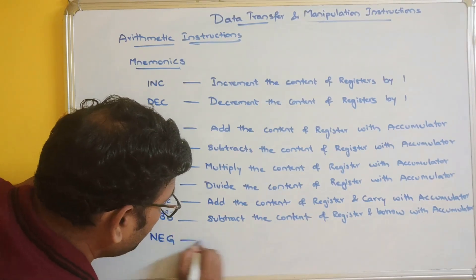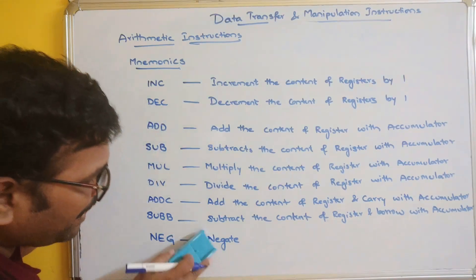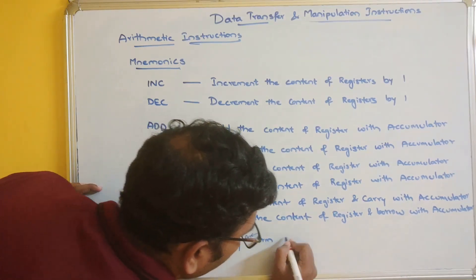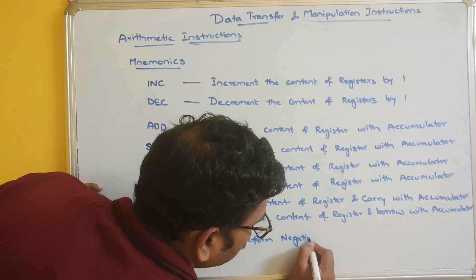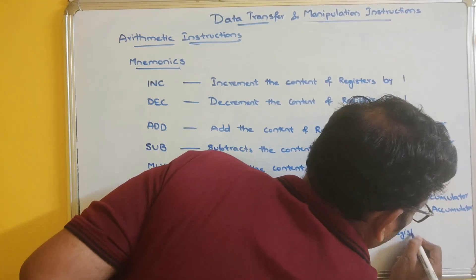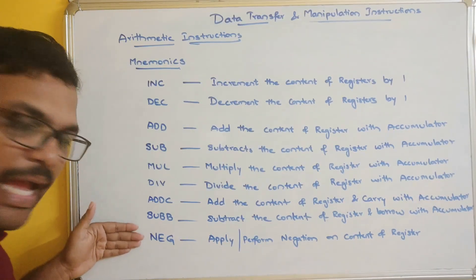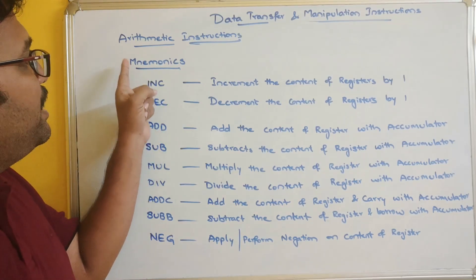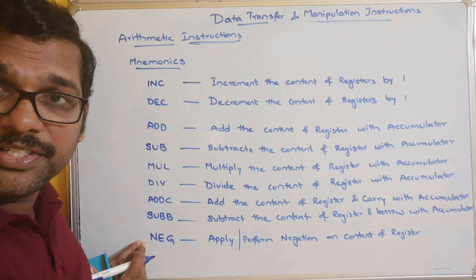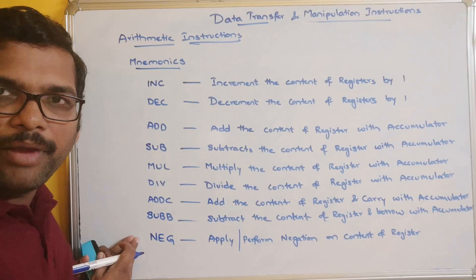NEG means negation - it applies or performs negation on the content of a register. So all these instructions - increment, decrement, add, subtract, multiply, divide, ADDC, SUBB, and negation - all come under the arithmetic instructions. These are the mnemonics which represent the operation. Op code is in binary format, while mnemonics are in string format.